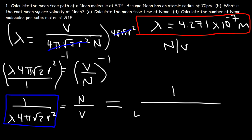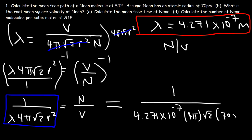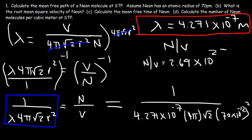Plugging in: it's 1 over lambda — which is 4.271 times 10 to the minus 7 — multiplied by 4 pi times the square root of 2, then r which is 70 times 10 to the minus 12, squared. The result is 2.69 times 10 to the 25 molecules per cubic meter.